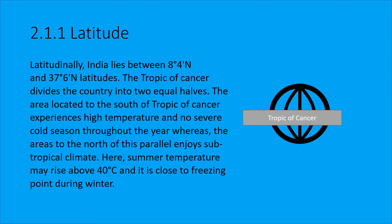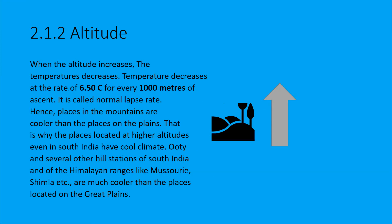In South India there is high temperature, and the cold season is not very cold there. But in the North it is the opposite — a subtropical climate. In summer temperatures go above 40 degrees centigrade, and in winter it can be freezing.